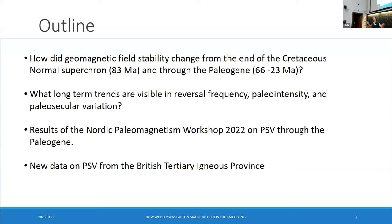So, first off, what do I mean by wobbly? Obviously, this is not a term that's technically defined, but I'm using it to describe a broad range of geomagnetic field properties. So the geomagnetic field stability changes across all of Earth's history. And I'm particularly looking at the period between the end of the Cretaceous long superchron, that's 83 million years, and then into the Paleogene, which starts at 66. Looking at long-term trends in reversal frequency, paleointensity, and paleosecular variation.